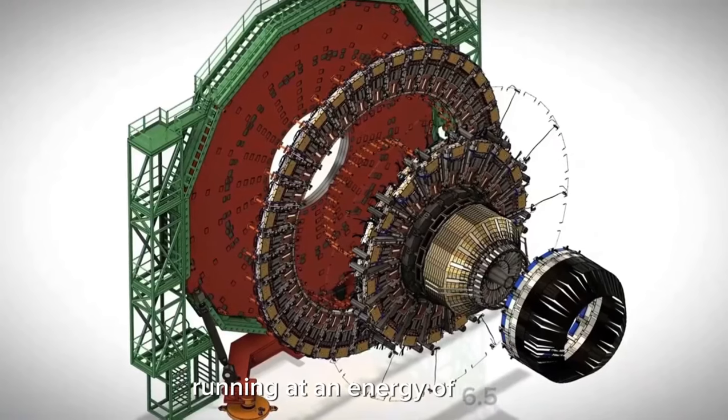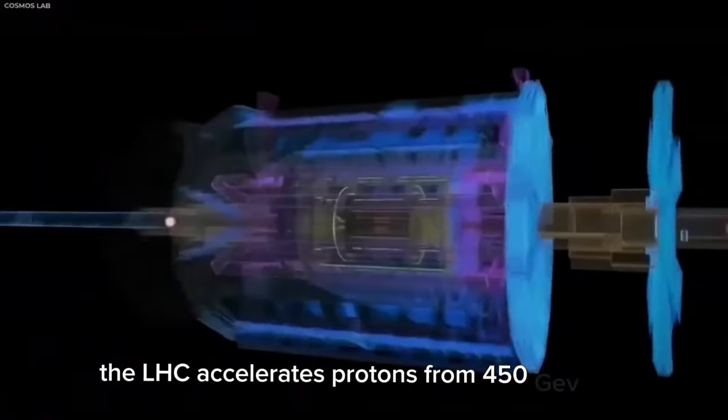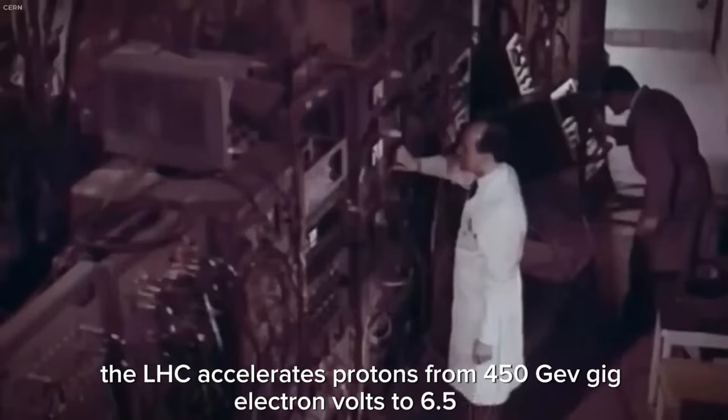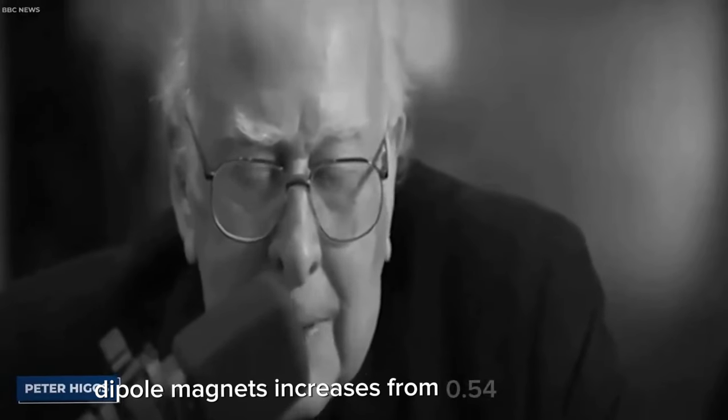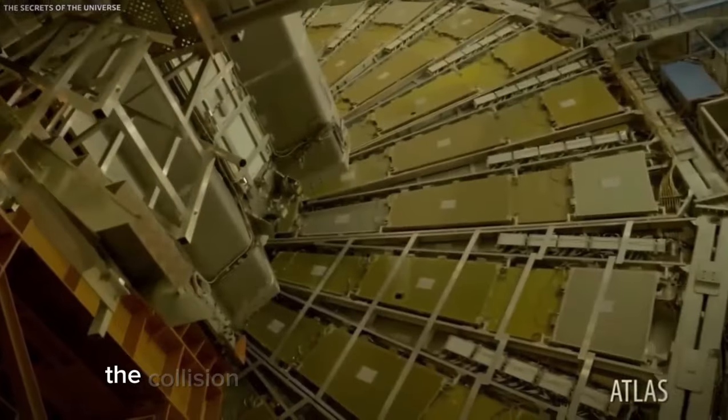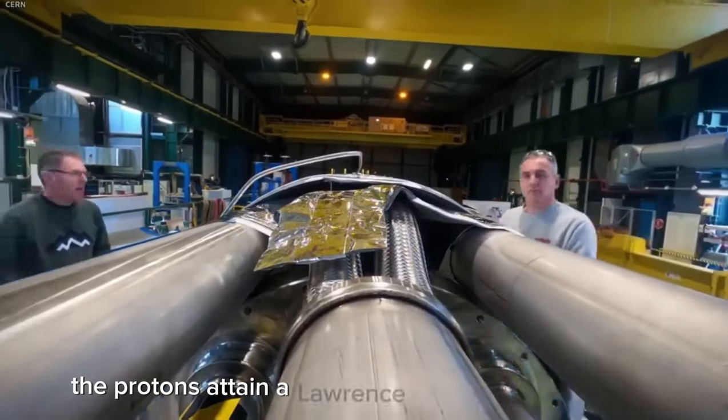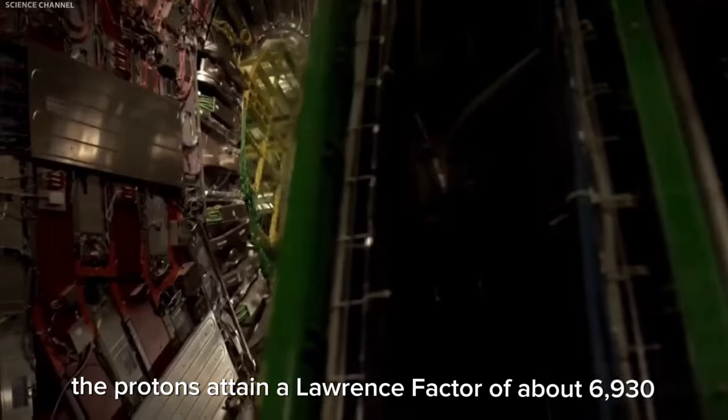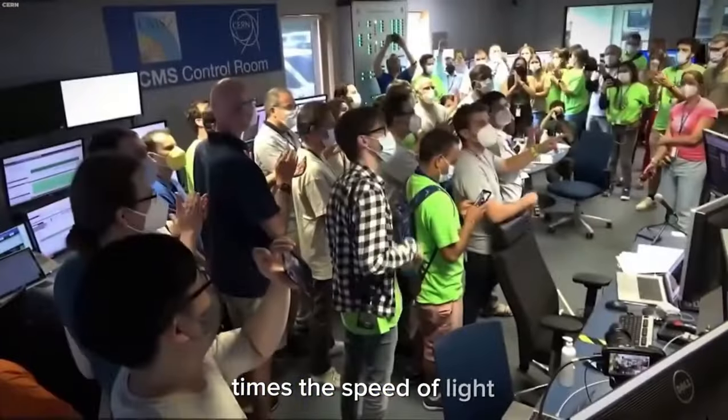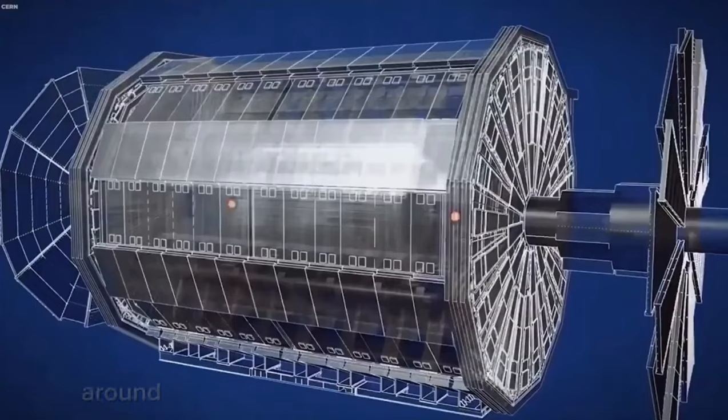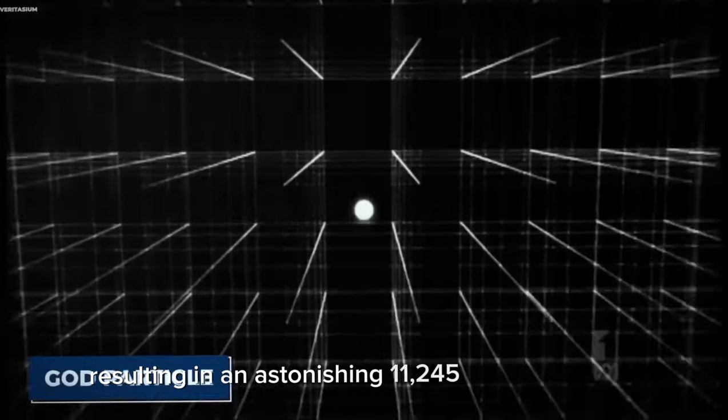Running at an energy of 6.5 TV, tera electron volts, per proton, the LHC accelerates protons from 450 GeV, giga electron volts, to 6.5 TV during this process. The magnetic field of the superconducting dipole magnets increases from 0.54 to 7.7 Teslas. The collision energy of the protons reaches an impressive 13 TV. At this energy level, the protons attain a Lorentz factor of about 6,930, moving at a velocity of approximately 0.999999999 times the speed of light. The time it takes for a proton to complete a full orbit around the main ring is less than 90 microseconds, resulting in an astonishing 11,245 revolutions per second.